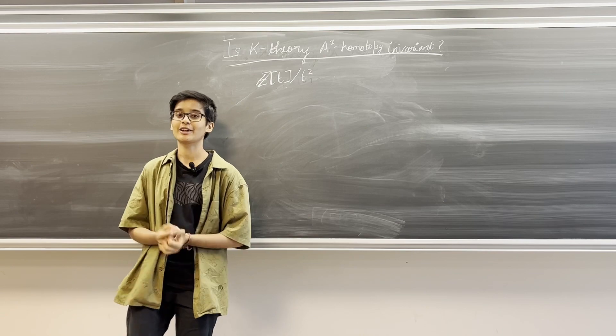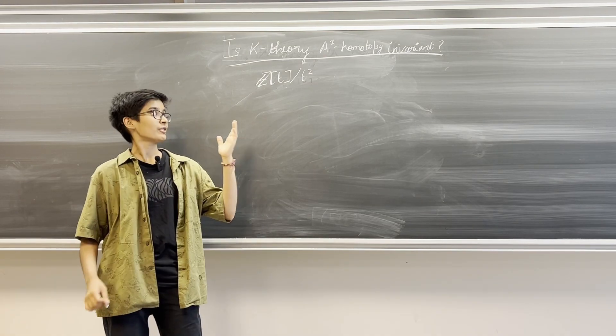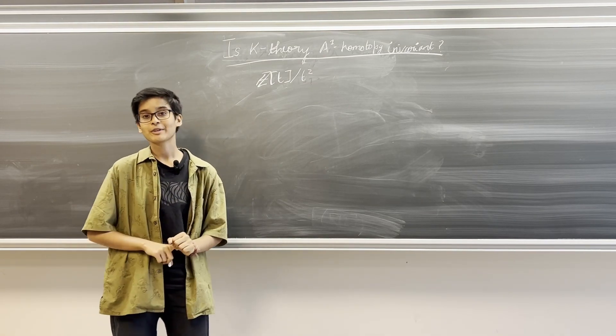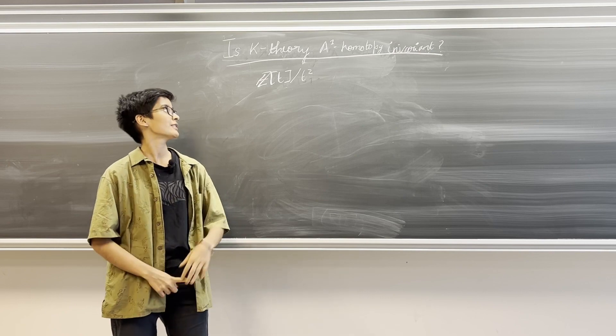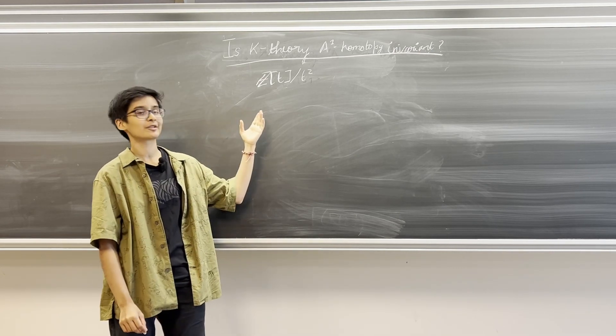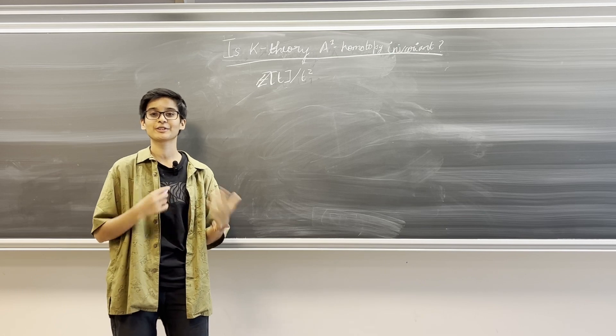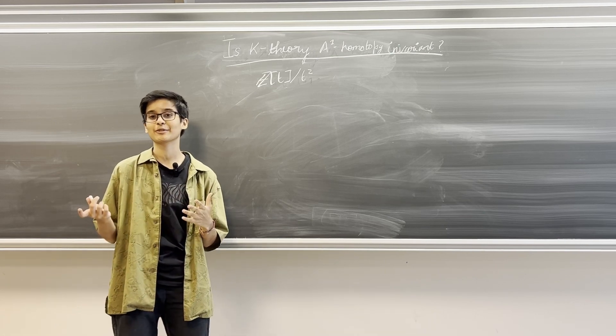If it were true that K-theory is always A1 homotopy invariant, we would get that the first K group of ℤ[T] over T² would be isomorphic to the first K group of ℤ[X,T] over T².